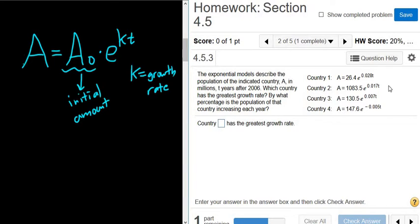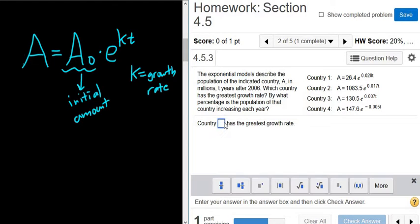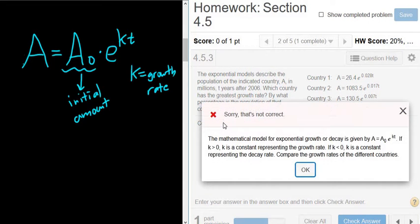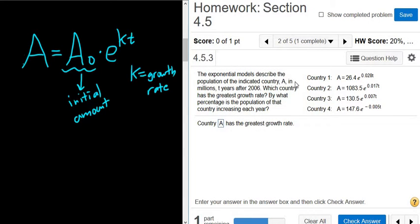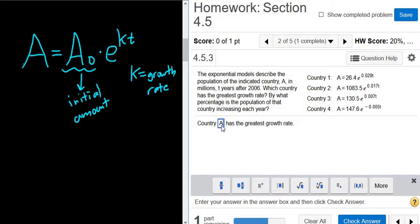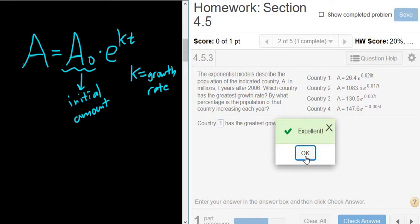So I guess in this case, it would be country A, I believe, because that's the biggest number. 0.028 is bigger than all the other numbers. So I'm just going to type in capital A. I think that's what it wants. No, I got it wrong. Oh, country 1. Sorry, country 1. They're all A. Country 1, the first one. Didn't see the numbers.